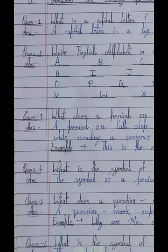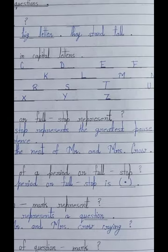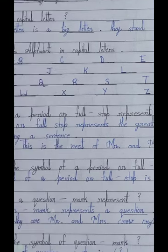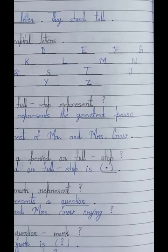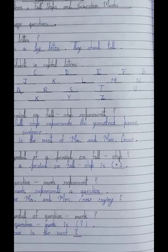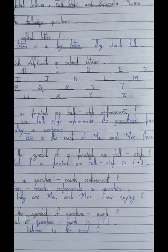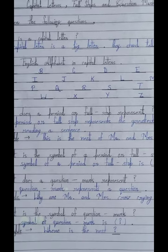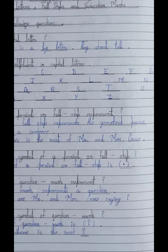For example: 'This is the nest of Mr. and Mrs. Crow.' It means 'Yeh Shree Maan aur Shree Mati Kauwe ka ghosla hai.' We can see here that the sentence ends with a full stop - this is where we stop, this is the full stop representing the greatest pause.